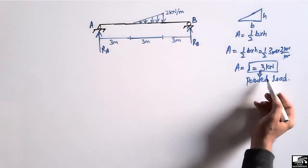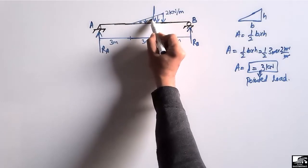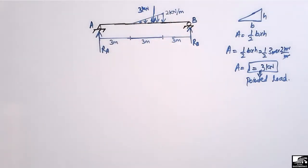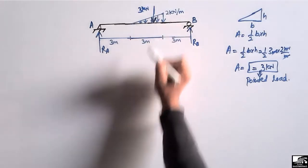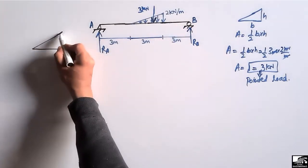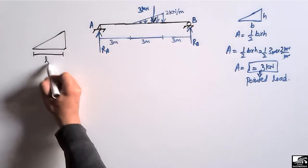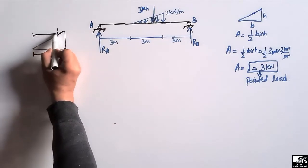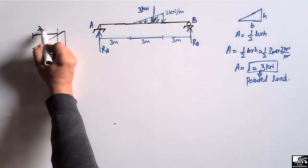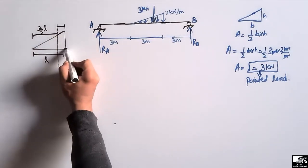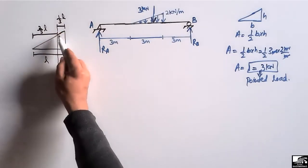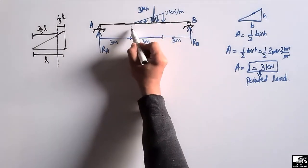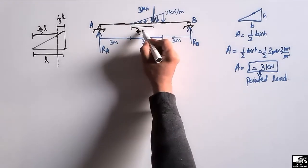This load will act at the centroid of this triangle. The load has a magnitude of 3 kilonewtons and it will act at the centroid. If the total length of the triangle is L, then the centroid is located at two-thirds of L from the zero-magnitude end, and one-third of L from the maximum-magnitude end.